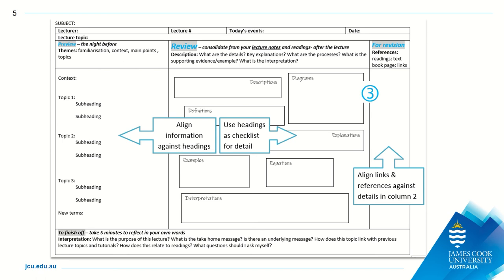You may need to include explanatory diagrams and key equations depending on the discipline area. You should aim to use additional resources such as textbook chapters, readings and websites to clarify your understanding. As you add detail to column 2, make sure you add any additional sources as references and links in column 3. This will be useful during revision time when you need to revisit helpful resources.